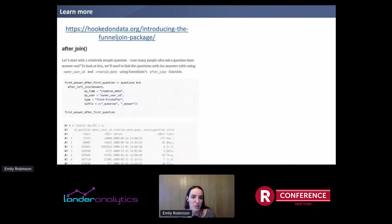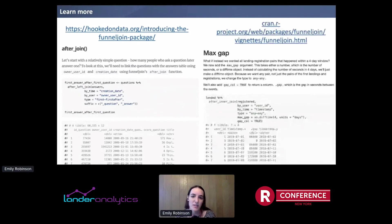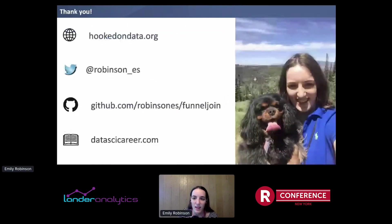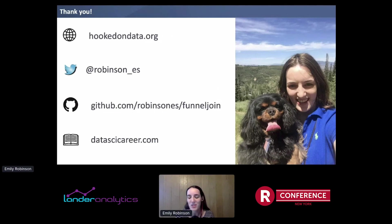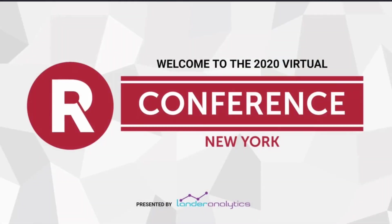If you want to learn more, I have a blog post with the Stack Overflow data at hookedondata.org — all the demo I did today is on that blog post with a bit more explanation. There's also a vignette on CRAN's website — just Google FunnelJoin vignette — which adds more on the max_gap argument and additional functions. I'm also on Twitter at Robinson underscore ES. You can find FunnelJoin on CRAN and on GitHub at RobinsonES slash FunnelJoin. Unrelated to FunnelJoin, I also wrote a book with Jacqueline Nolis called Build a Career in Data Science at datascicareer.com — there are free copies to give away and you can get 40% off with BuildBook40. Thank you all so much.